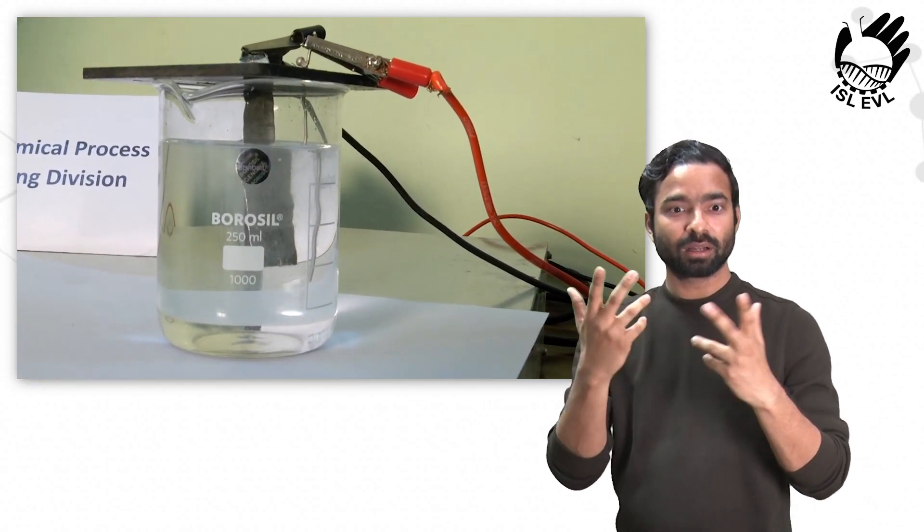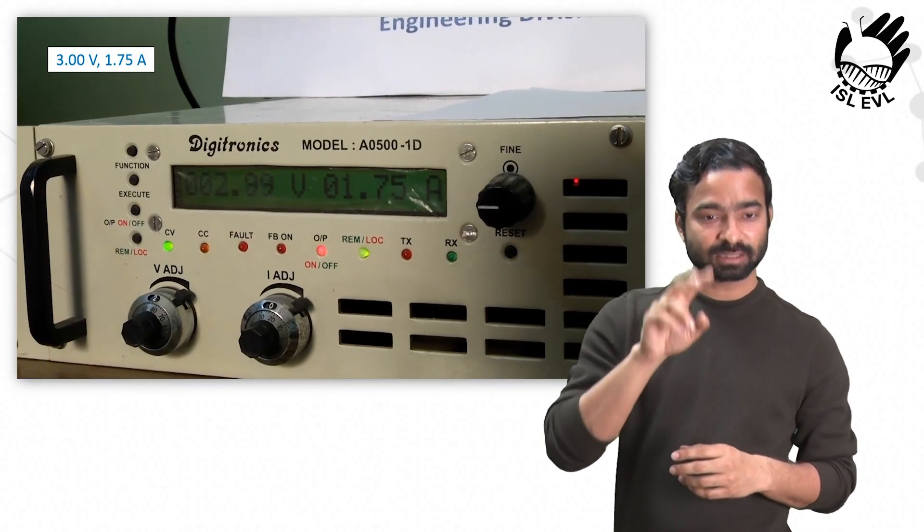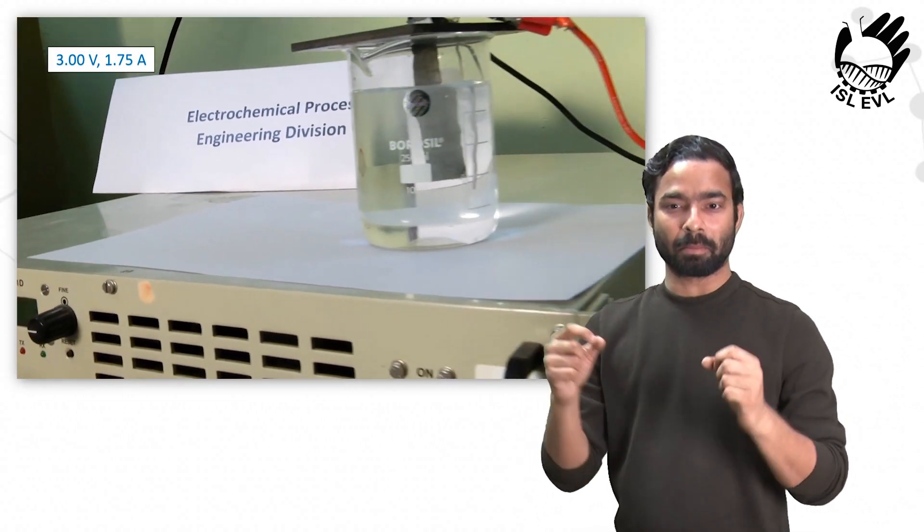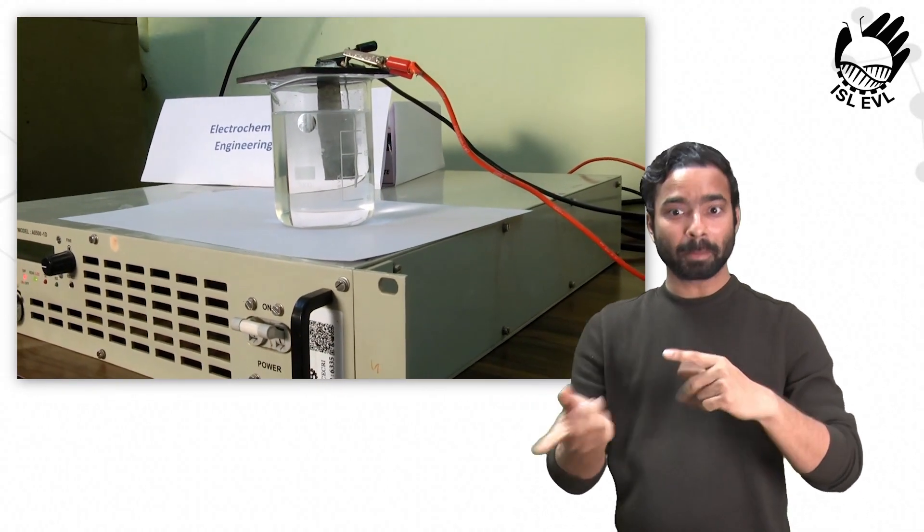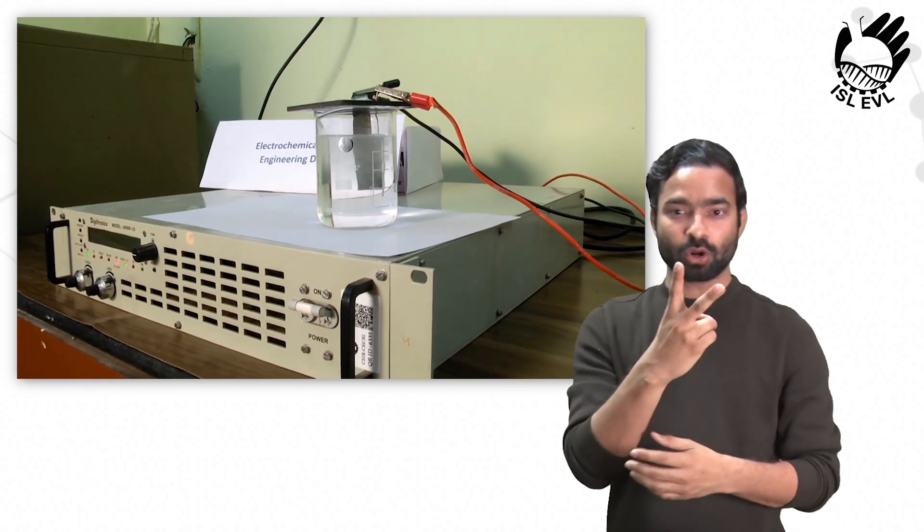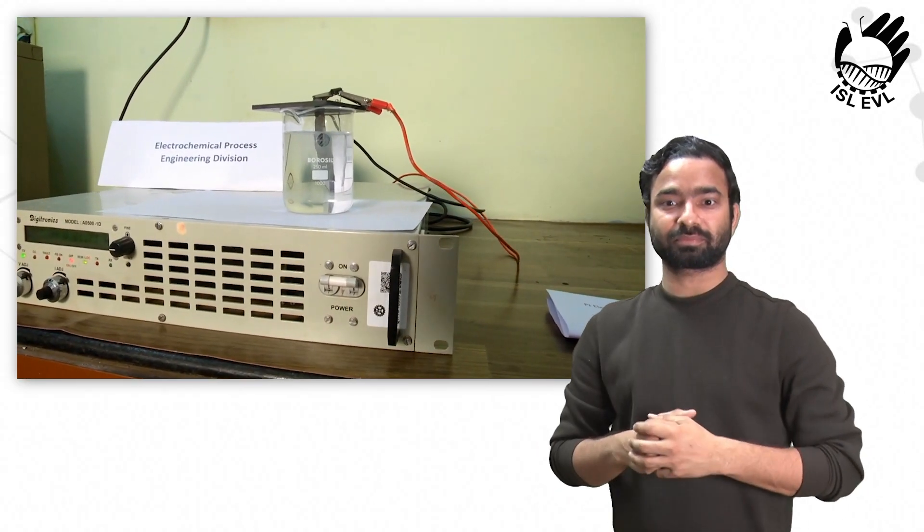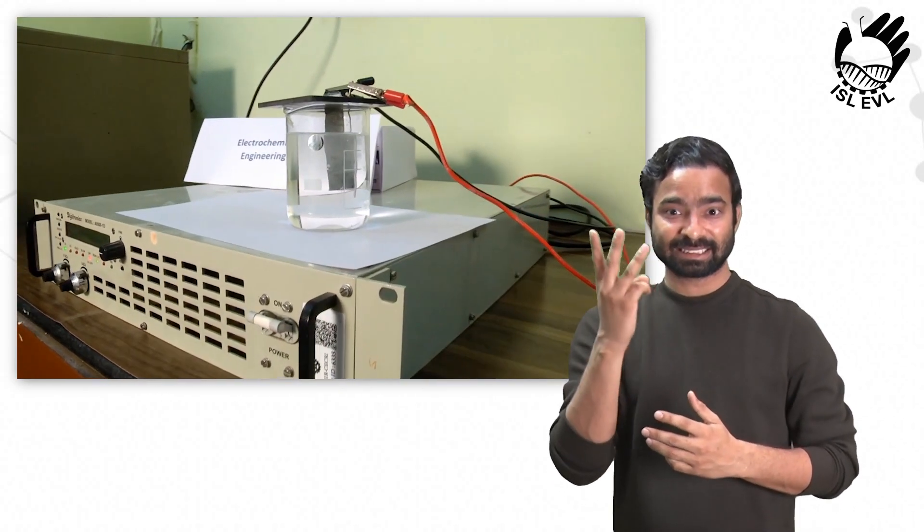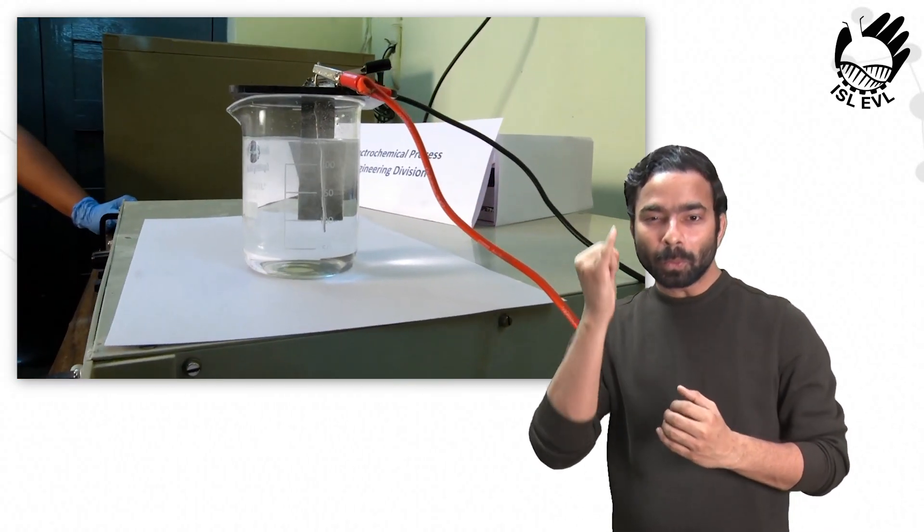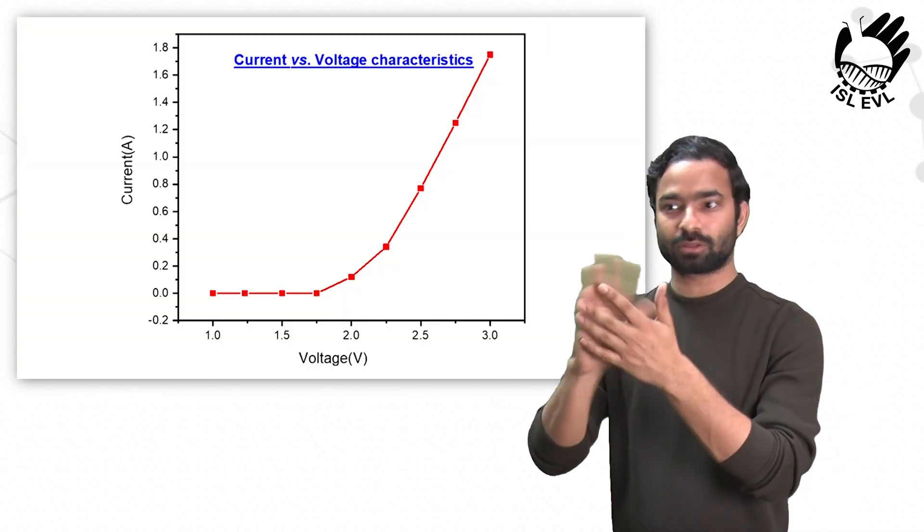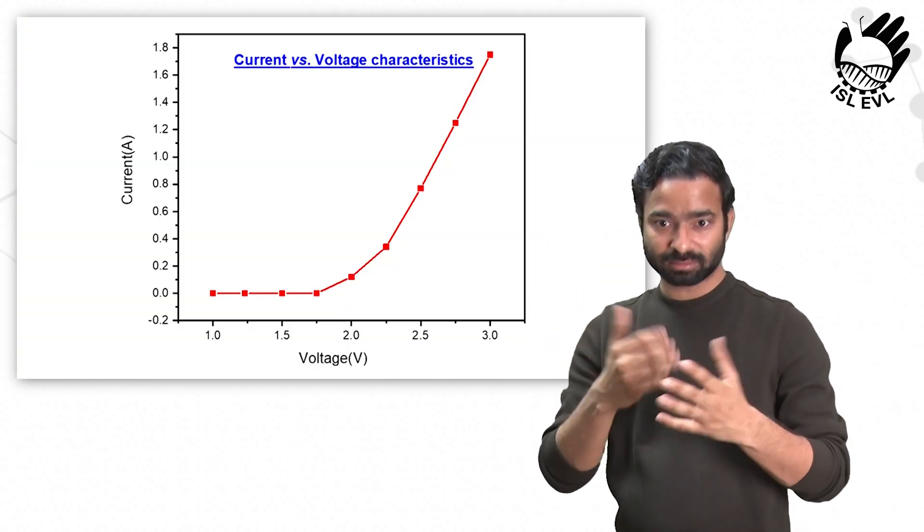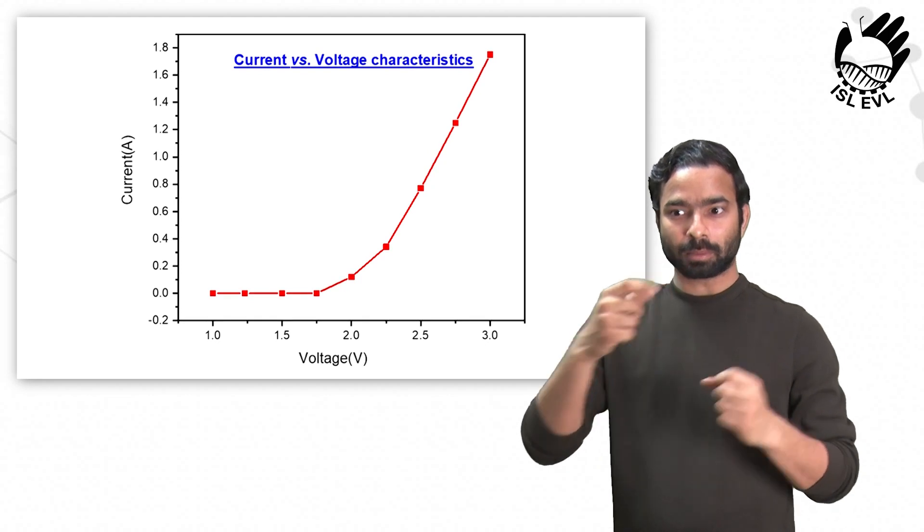Finally, when the cell voltage is raised to 3 volt, the reading is 1.75 ampere current. We can also observe the rapid increase in gas formation as the cell voltage is increased. At 3 volt, there is a possibility of ozone formation at the anode. Through this simple experiment, we have observed the current voltage characteristics and the results are shown in this graph.